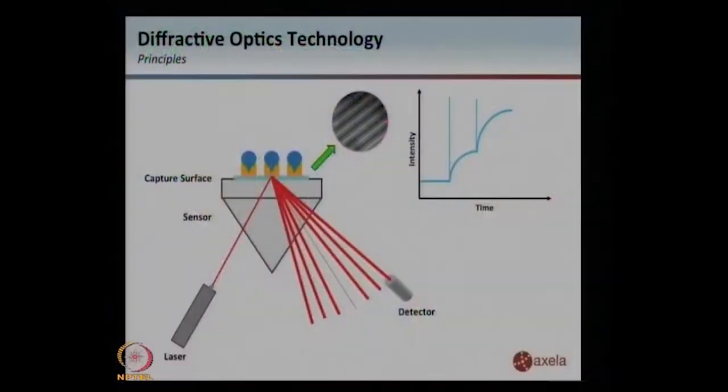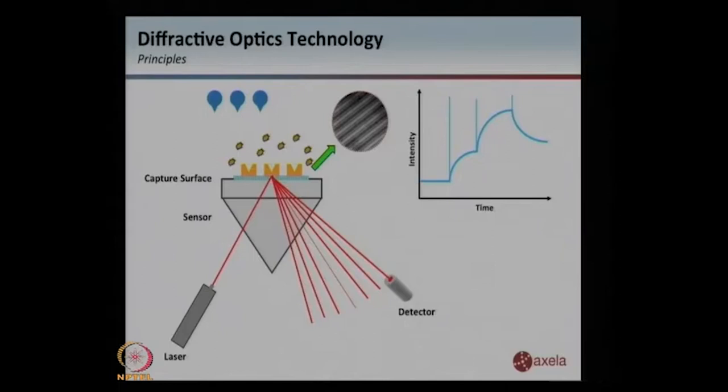This is very similar to what we discussed in the previous class on surface plasmon resonance methods — we have the baseline, measuring time versus intensity on the X and Y axes. Then we will have an on rate, we will have an off rate. Depending on how strong or weak the interaction is, one can actually compute the values for measuring the on rate, off rate, and the kinetics. So it's very similar to surface plasmon resonance, and in fact a lot of the principles are similar in that it depends on the index of refraction difference.